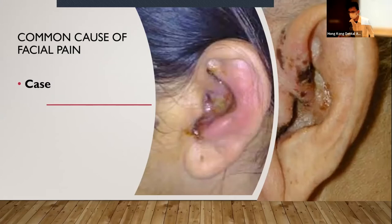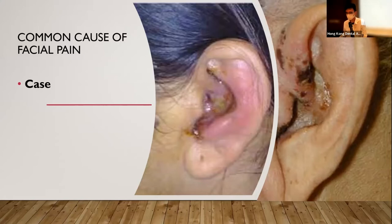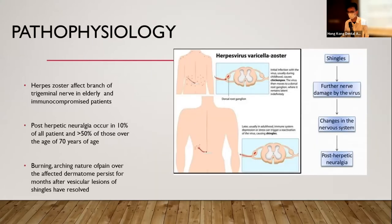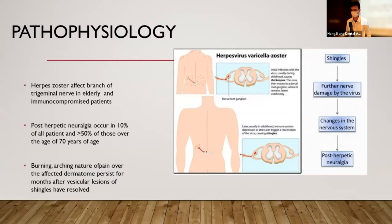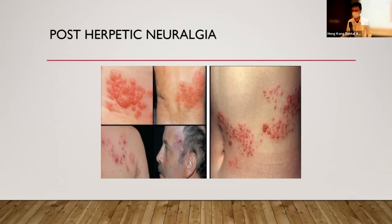Another common cause of facial pain is herpes zoster. Patients present with a rash feeling of the ear and facial pain, followed by development of the typical rash along the distribution of the nerve. Zoster is a latent virus in the dorsal column; when patients have low immunity, they have an attack. One common complication, particularly in elderly persons, is post-herpetic neuralgia, occurring in more than 10% of patients and over 50% of patients more than 70 years of age, presenting with burning, aching sensation of the affected dermatome persisting weeks to months after the shingles lesions resolve.